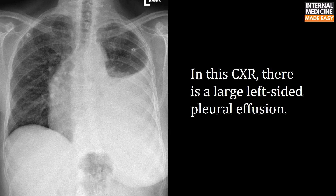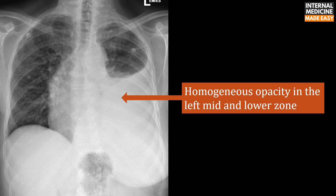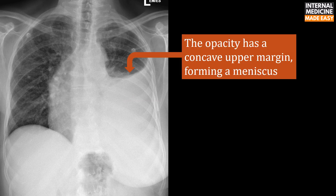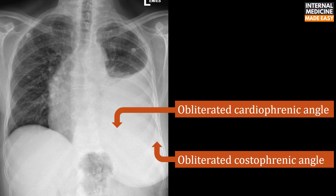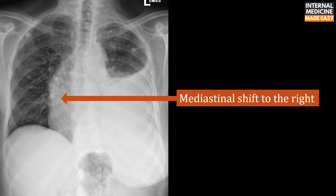In this test X-ray, there is a large left-sided pleural effusion. There is homogeneous opacity in the left mid and lower zone. The opacity has a concave upper margin, forming a meniscus. The cardiophrenic and costophrenic angles are obliterated, and there is mediastinal shift to the right.